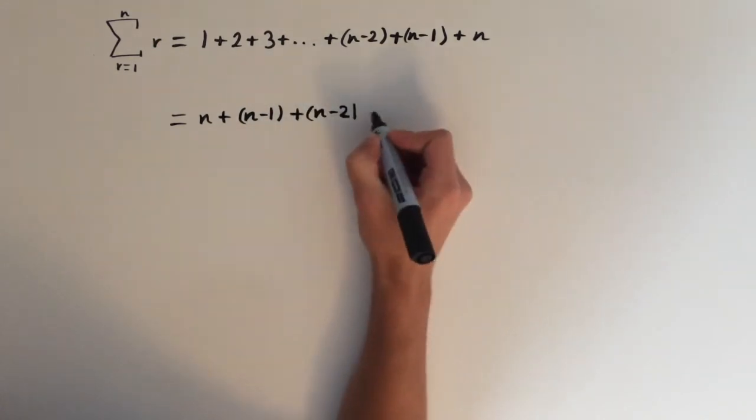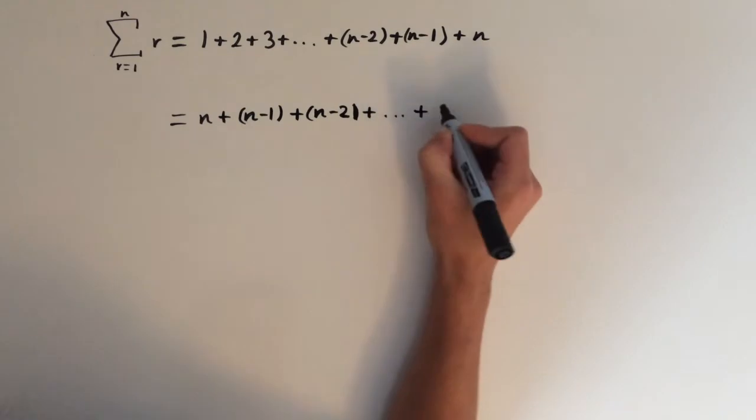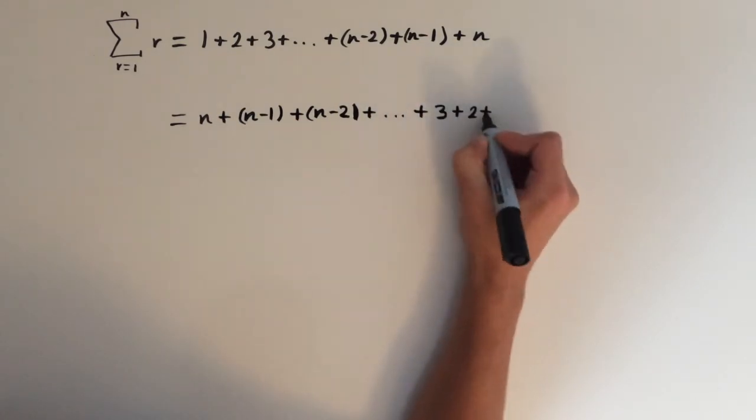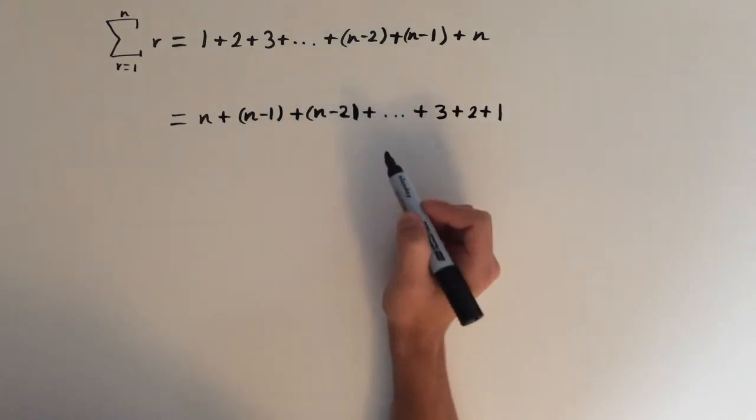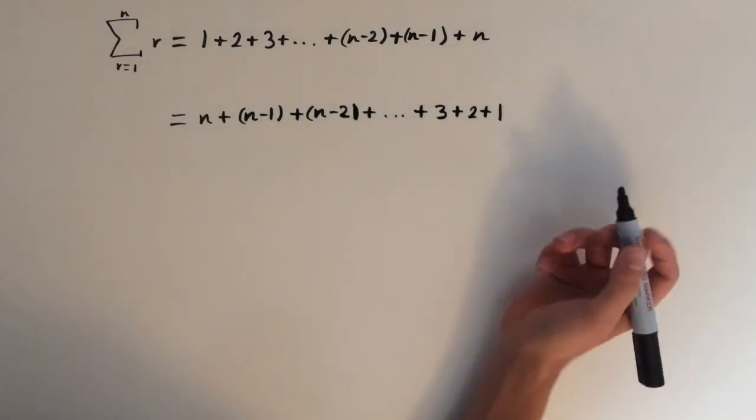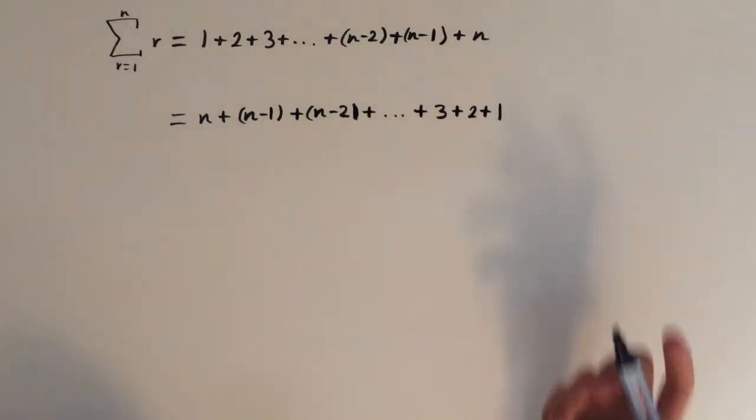Now, both of these series are going to have the same sum, because it makes sense if you start counting at 1 or start counting at the nth term, it's going to come to the same total.